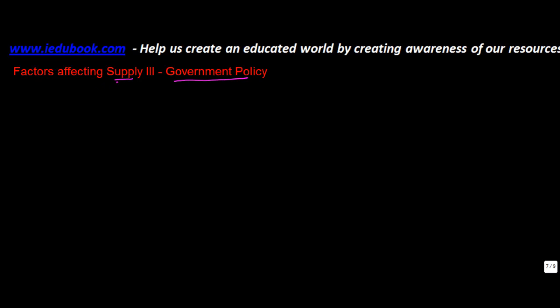Let's understand the last of the factors which has an impact on the supply of goods. This is part 3 of factors affecting supply, and this is government policy. Now, how does government policy affect the supply of goods? Basically, there could be various measures which could be there.